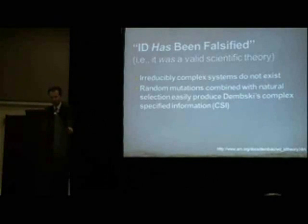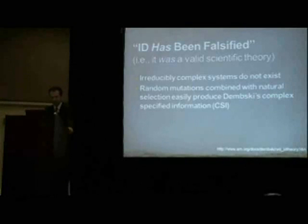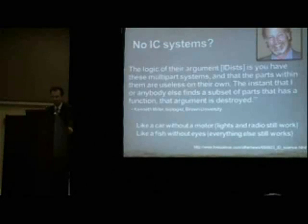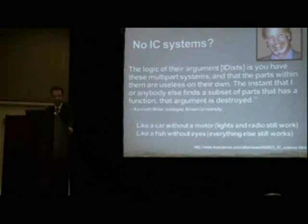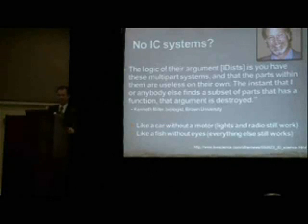Let's look at arguments of things that have been falsified. The claim is that irreducibly complex systems do not exist — that Behe's whole idea that irreducible complexity is evidence of intelligent design has been falsified. Because random mutations do combine with natural selection to easily produce what Dembski would also call specified information. So his idea on specified complexity is also falsified. Kenneth Miller, a famous biologist from Brown University who has written several very popular books, writes: 'The logic of their argument is that you have these multiple-part systems, and that the parts within them are useless on their own. The instant that I or anybody else finds a subset of parts that actually has a function, the argument of irreducible complexity is destroyed.'